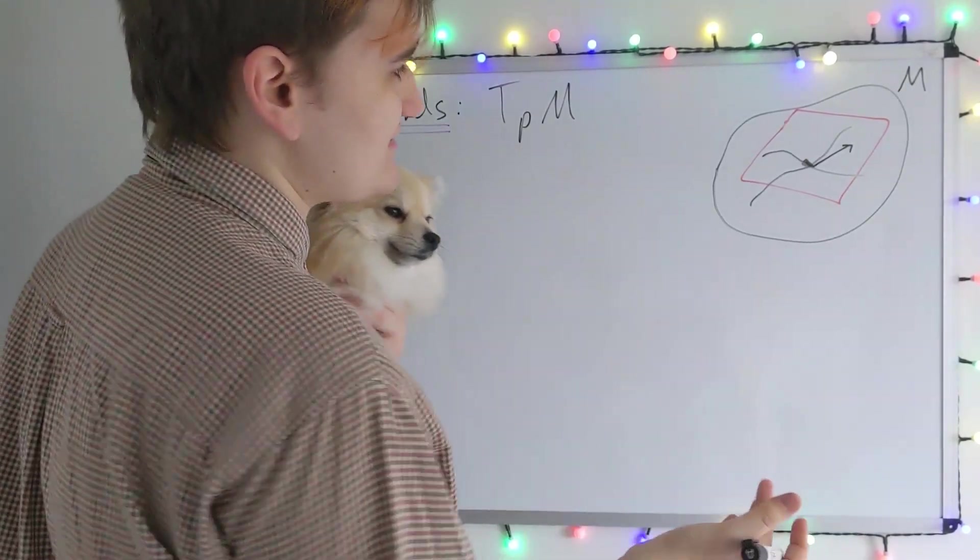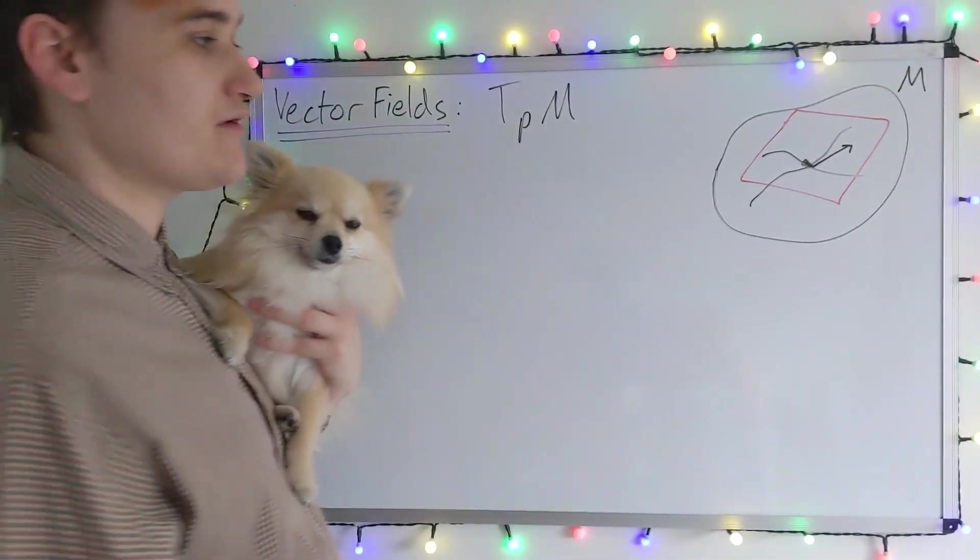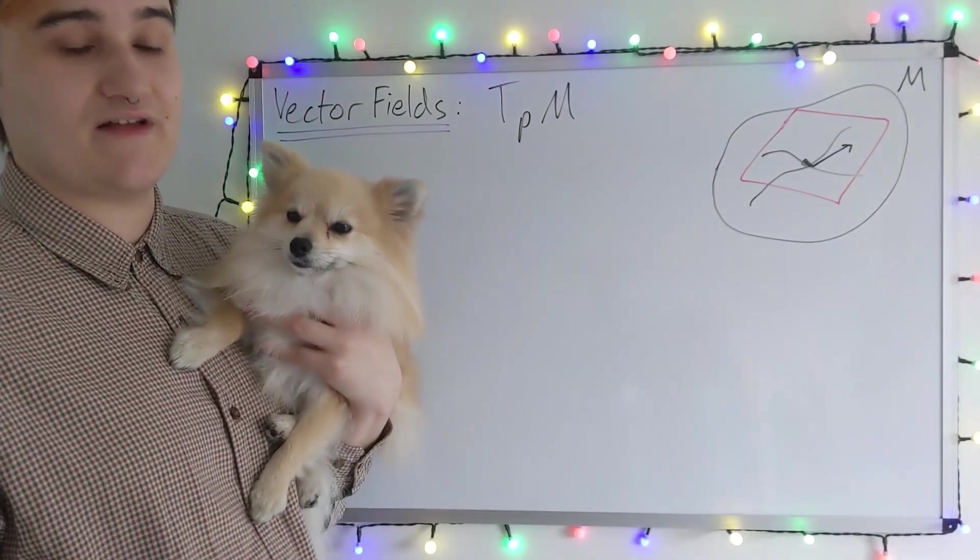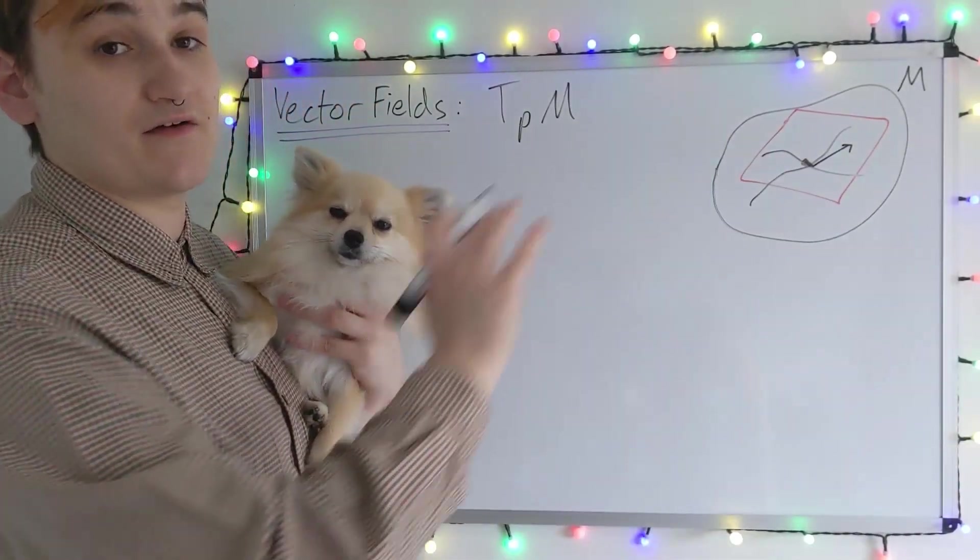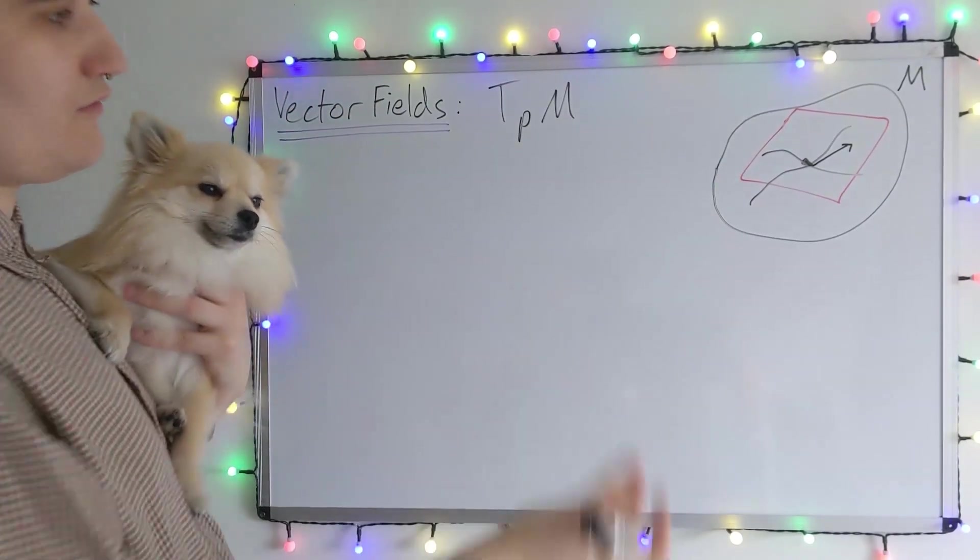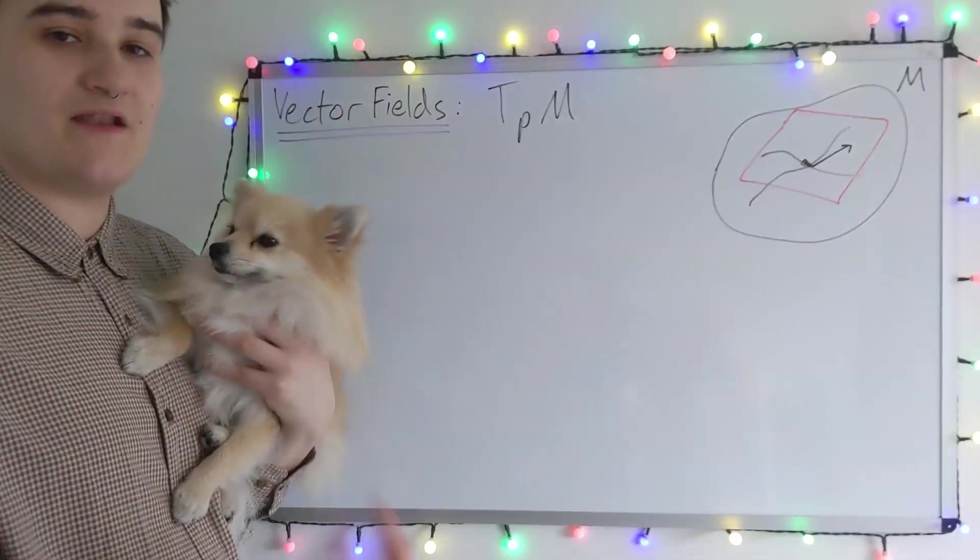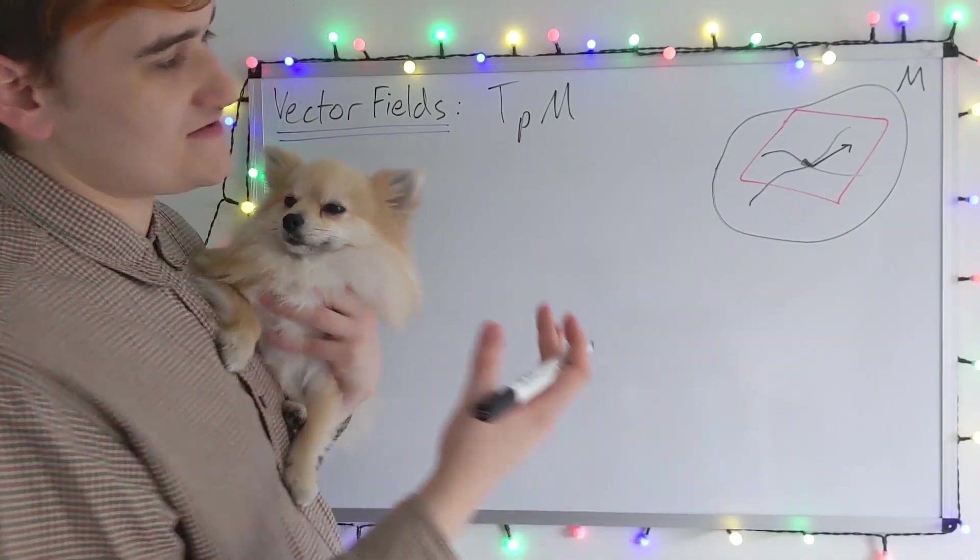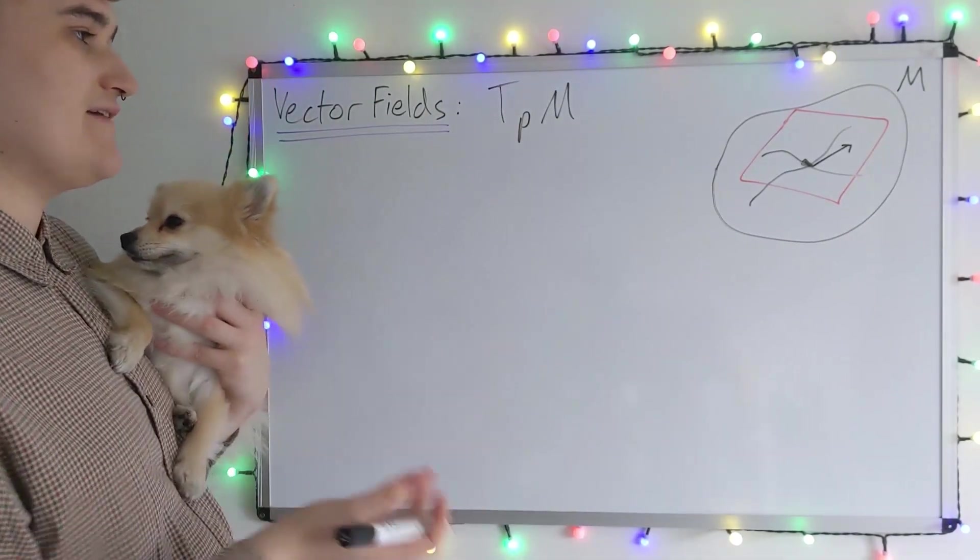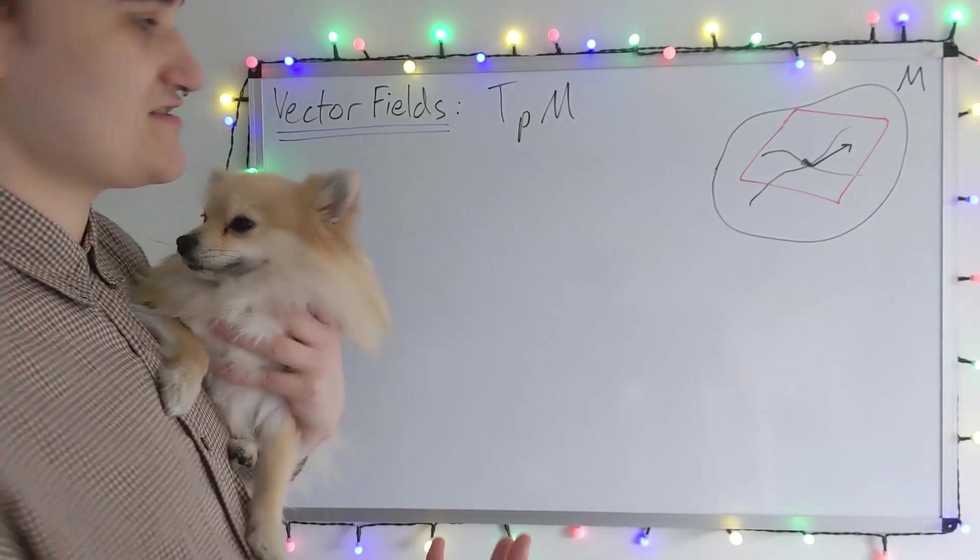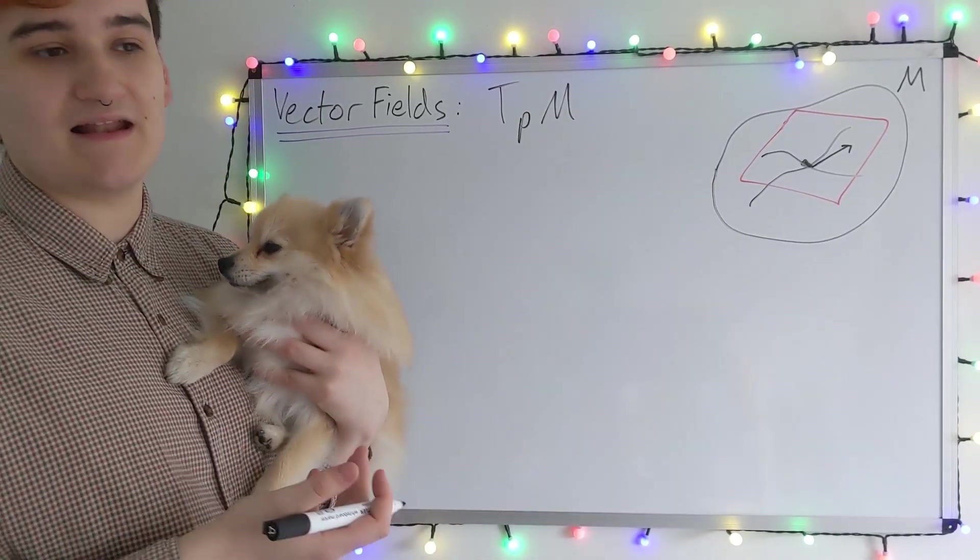If we wanted to talk about now a vector field, which we would intuitively understand as being a vector defined over the entire manifold, we're going to need some new technology to do this. When we want to talk about vectors at separate points, they live in their own independent tangent spaces as vector spaces, they're completely independent.